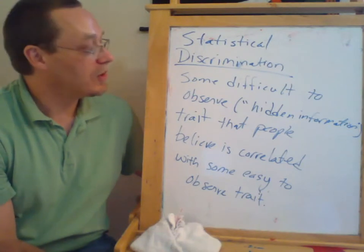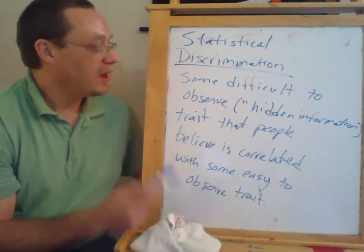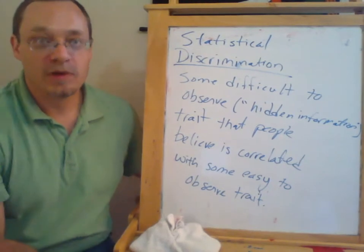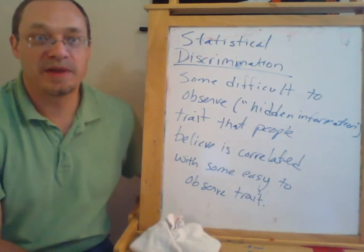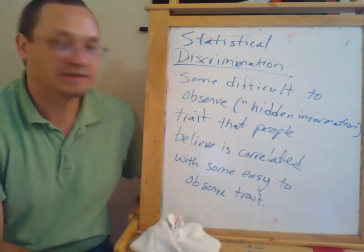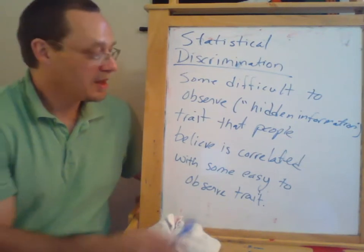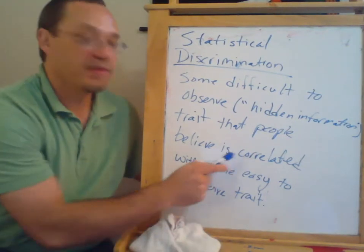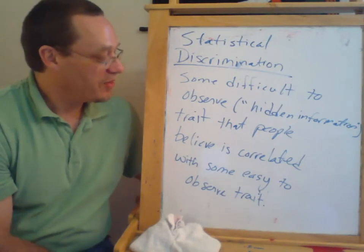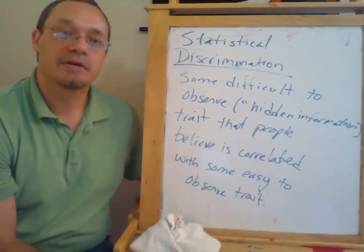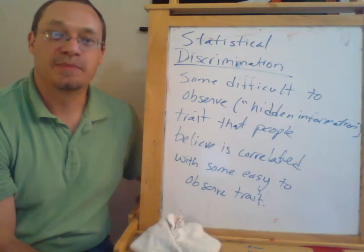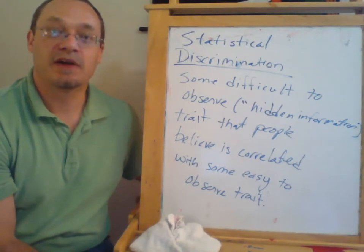A profit-maximizing firm will have an incentive and will benefit from engaging in statistical discrimination if their beliefs are true, and they will be hurt by engaging in statistical discrimination based upon beliefs that are untrue.